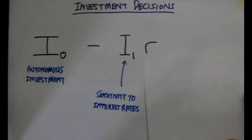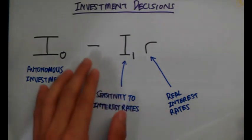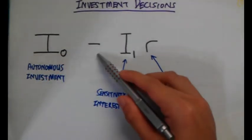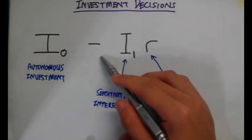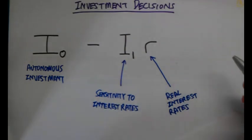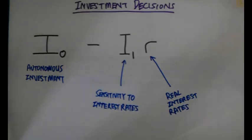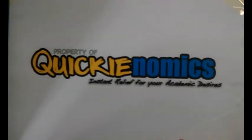I₁ is the sensitivity to interest rates — how sensitive firms are to interest rates. R stands for the real interest rate. Notice the negative sign in the function. This means investment decisions are indirectly related to interest rates — we will see why shortly. For now, just remember this investment function.